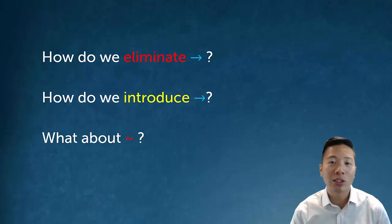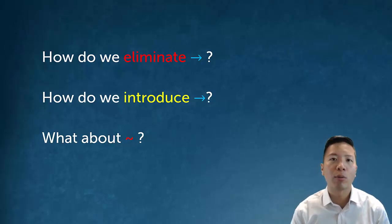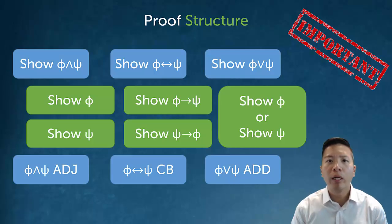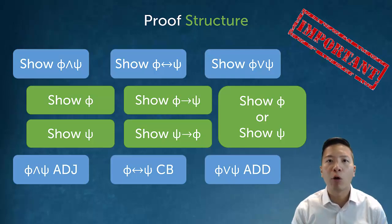For negation, we only really introduce it when we do an indirect derivation and assume ID — that's really the only place where you would put in a negation. Really understanding the difference between elimination and introduction in terms of our rules is very helpful. Elimination rules are going to be automatic moves, and that's really important.